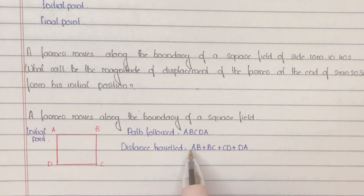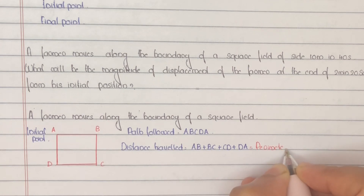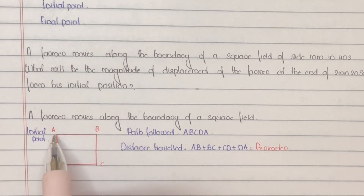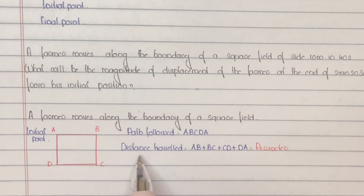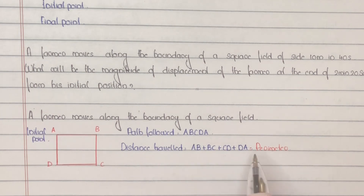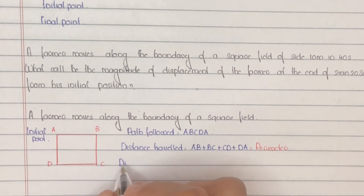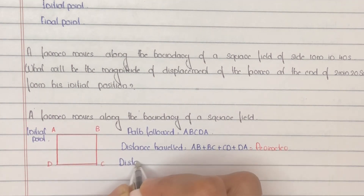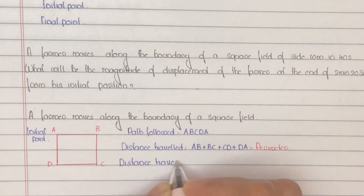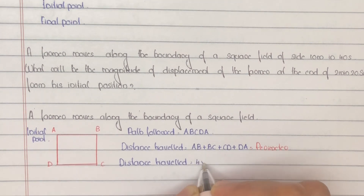This total distance is the perimeter of a square. We know that in a square all sides are equal, so the distance travelled can be written as 4 × side. When he completes one round, distance travelled will be 4 × side.